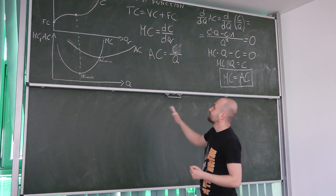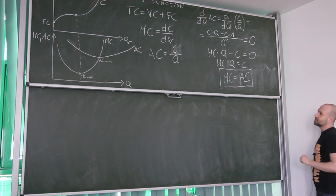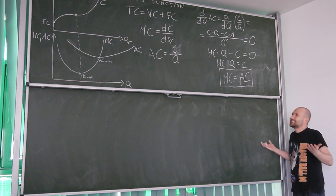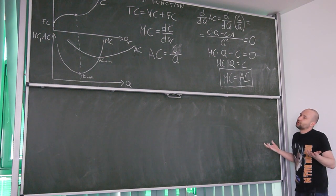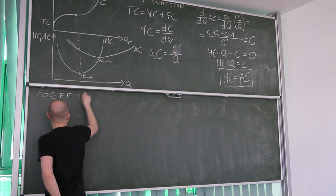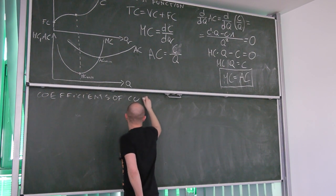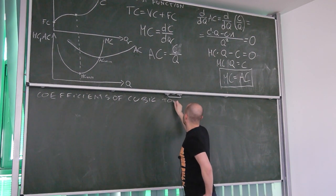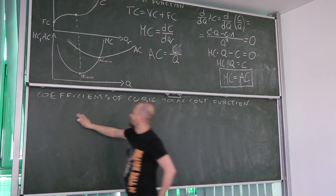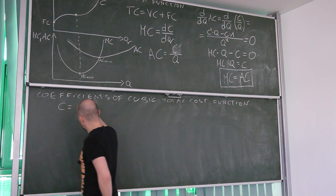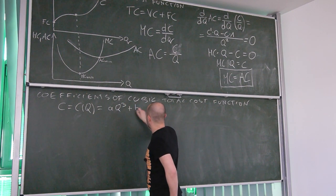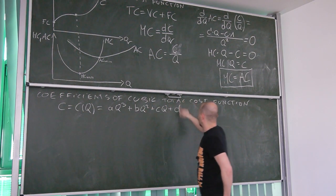We need to make sure that the cubic function we are going to use fulfills everything we said. It cannot be decreasing — we need a function that is always increasing. The function must have a non-zero fixed cost. Our cubic total cost function will look like this: it is a function of the level of production q, given by aq³ + bq² + cq + d.